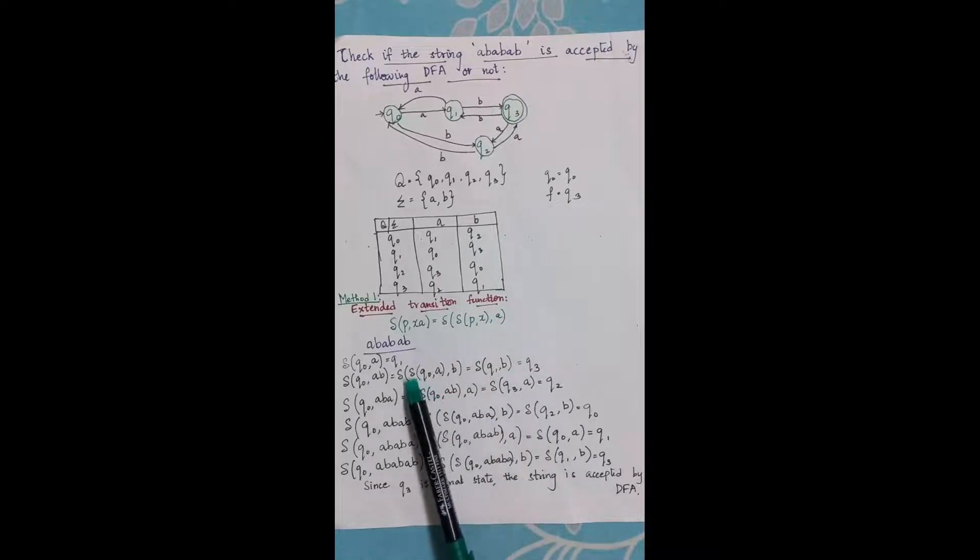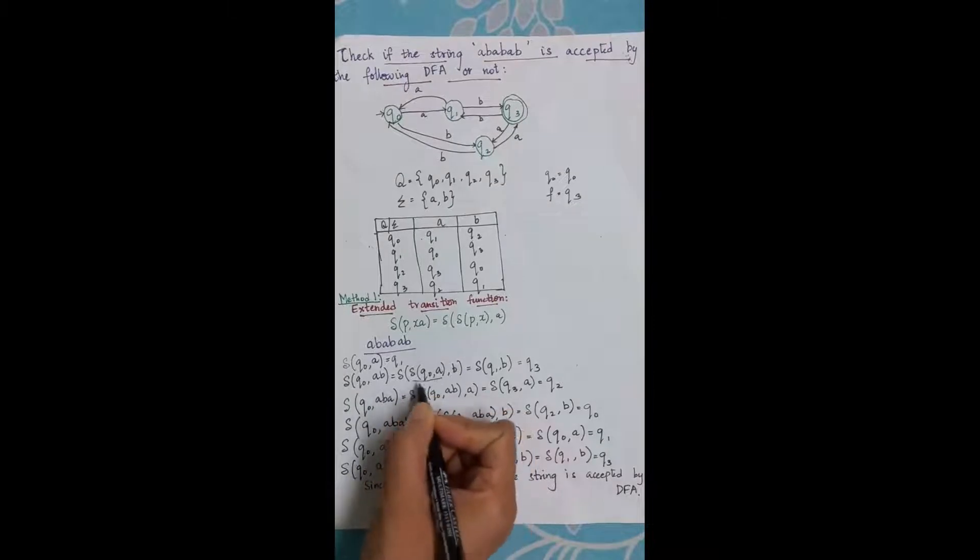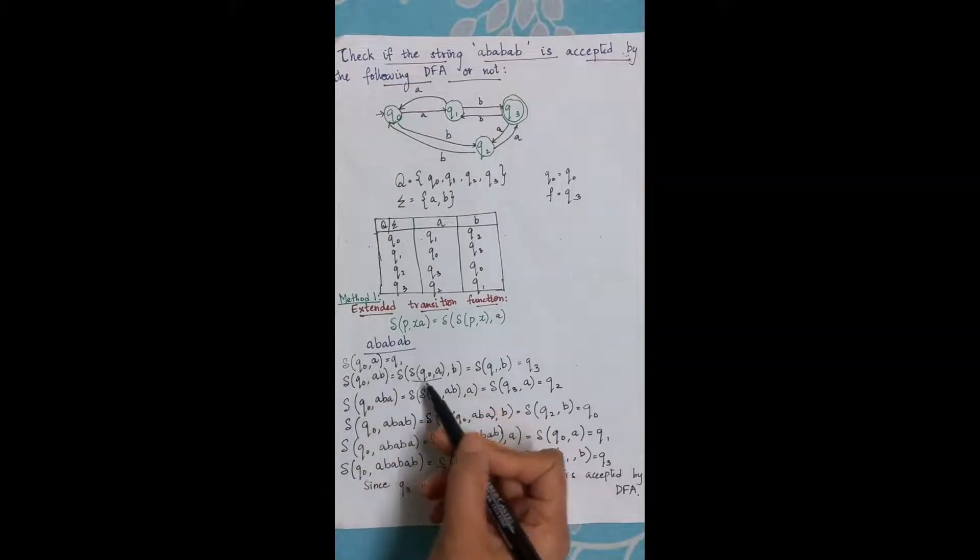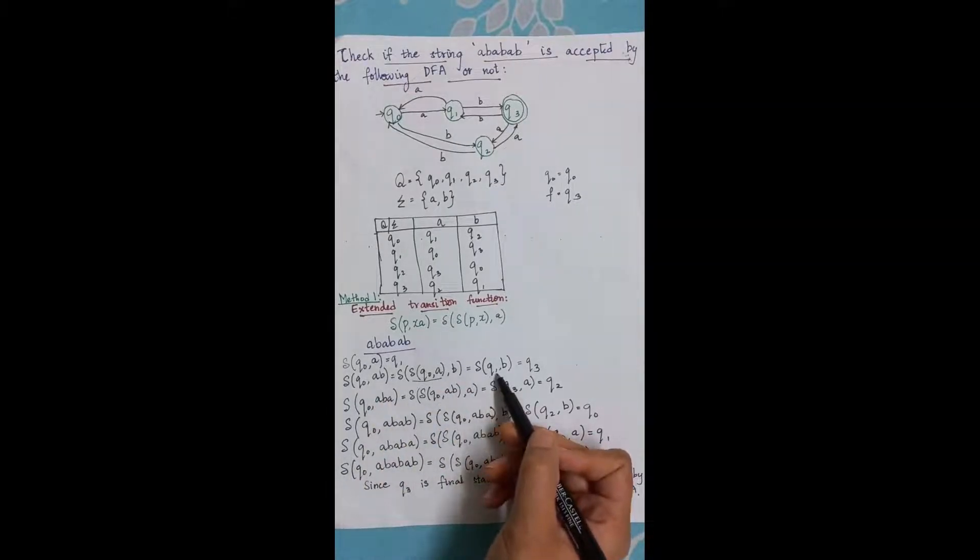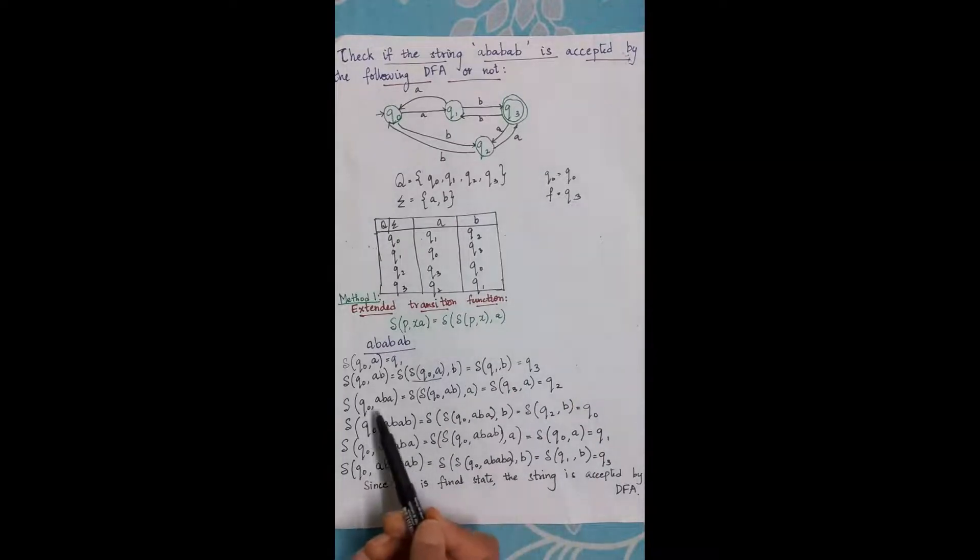So now I know that delta of q0 comma a, which is the same as the first line, is nothing but q1 comma b. So q1 with b gives me q3. Now I will take three alphabets at a time.